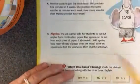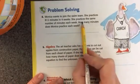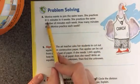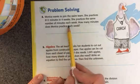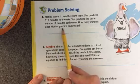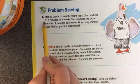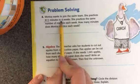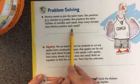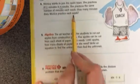Let's look at the problems on the back. Monica wants to join the swim team. She practices 812 minutes in 4 weeks. She practices the same number of minutes each week. How many minutes does Monica practice each week? If I take the big number, 812, and divide by 4, I'll get how many minutes she practices each week. Okay.